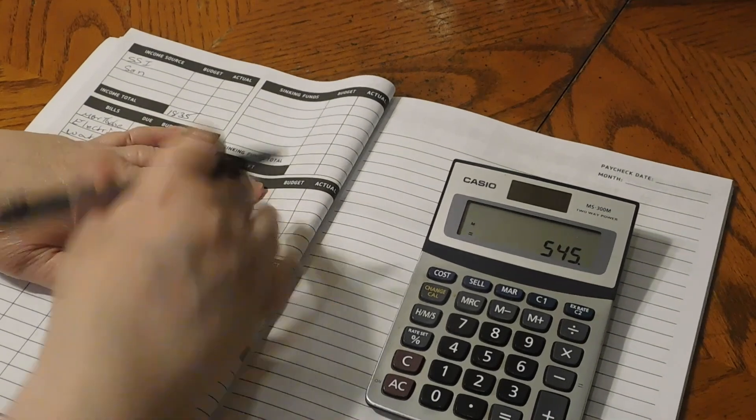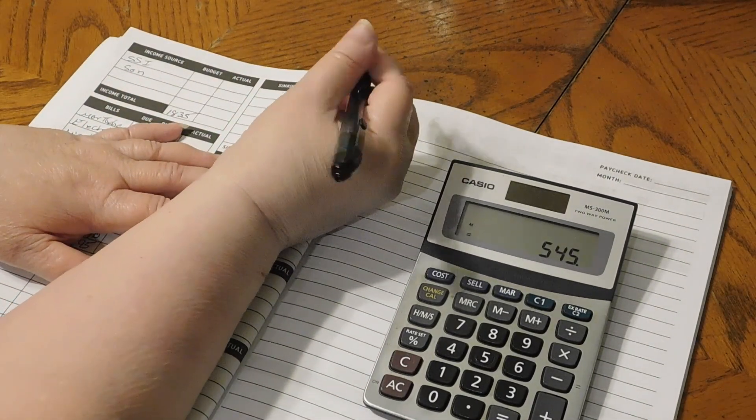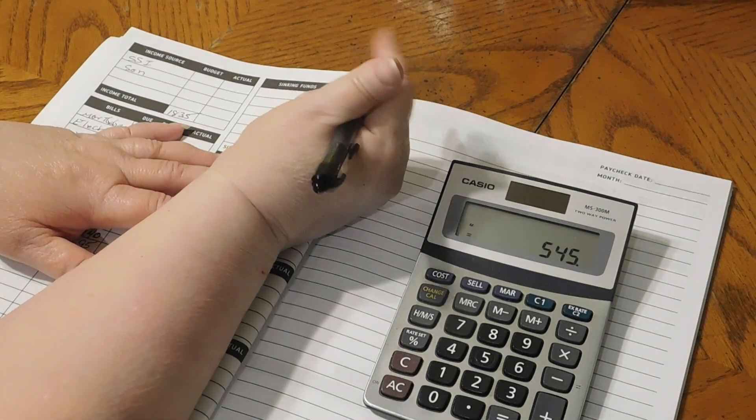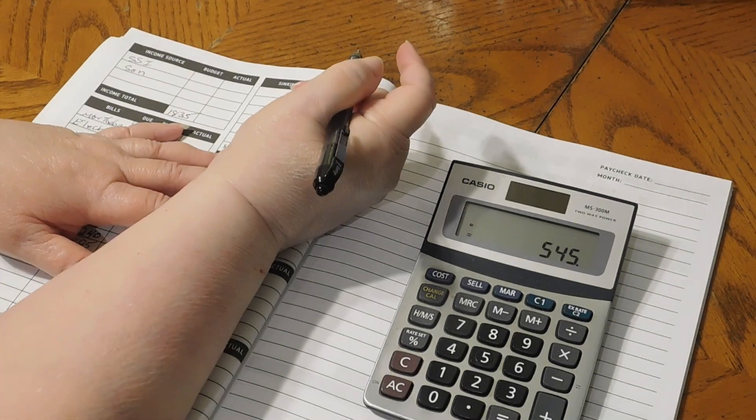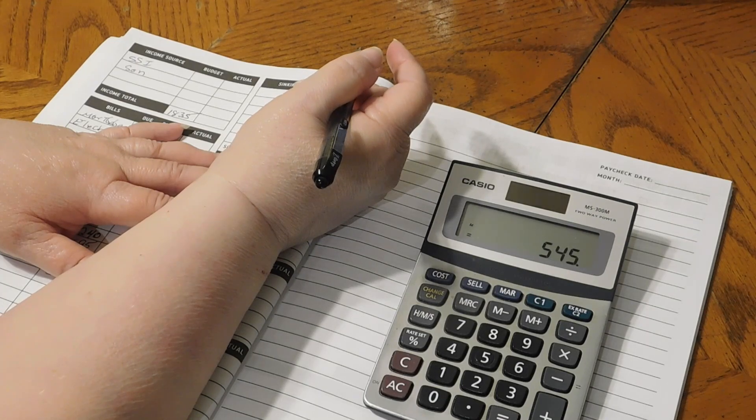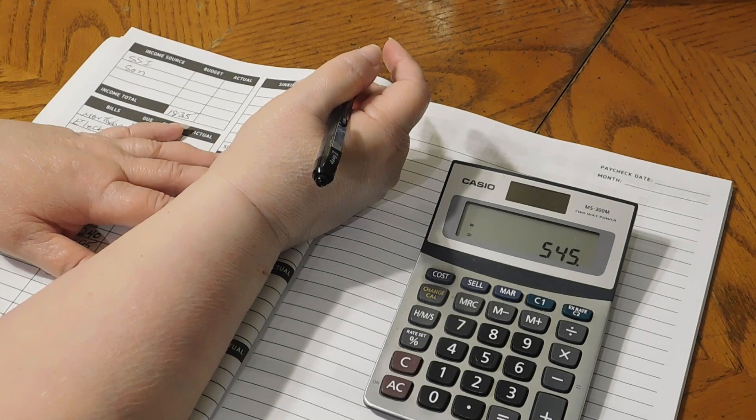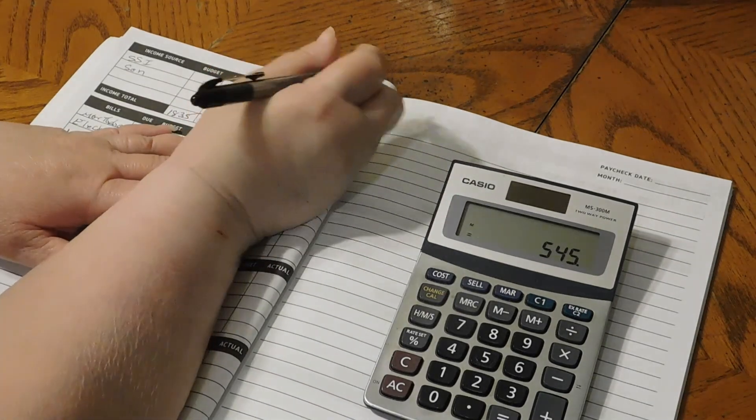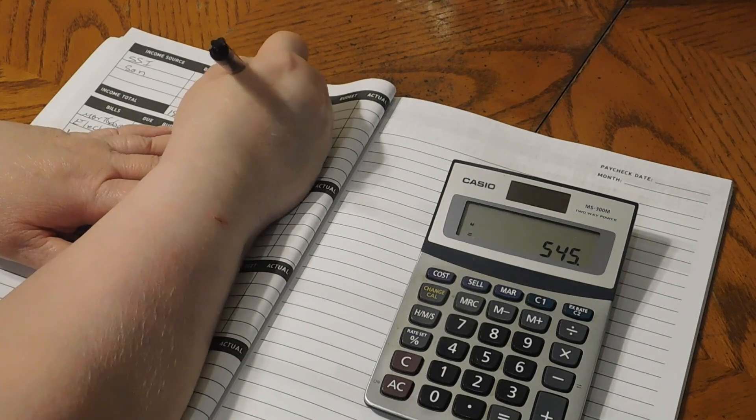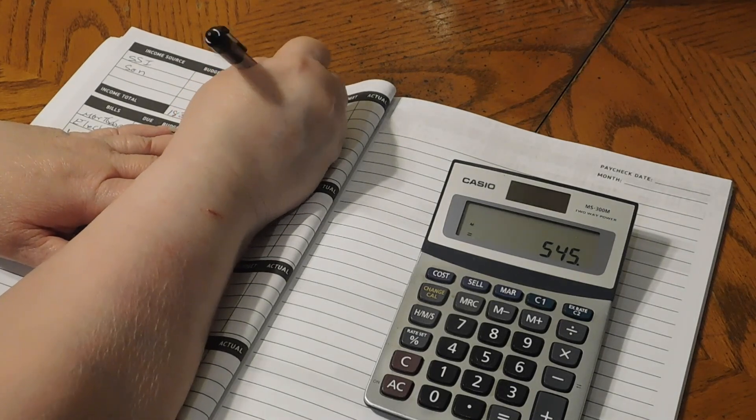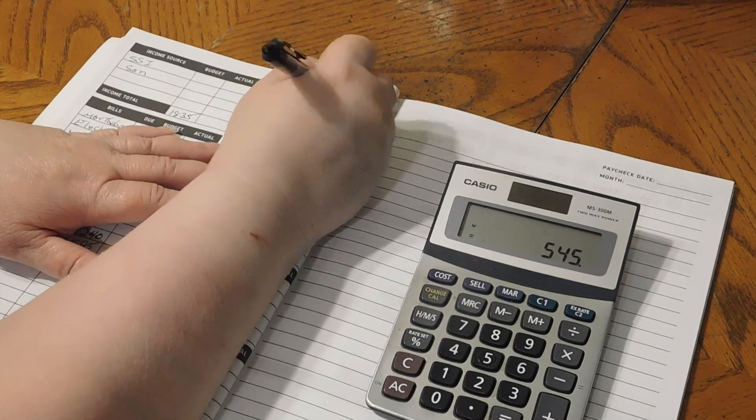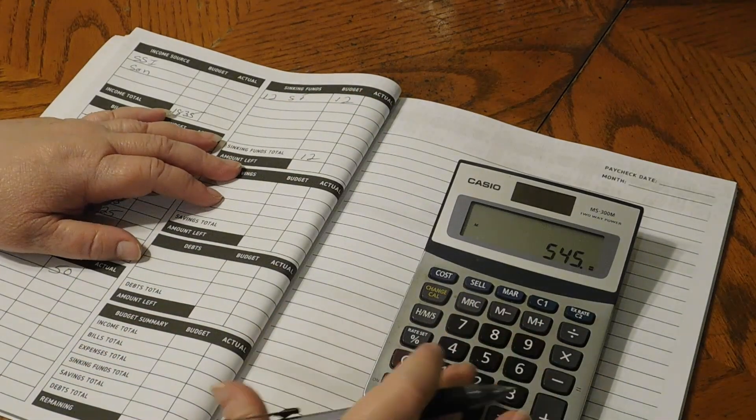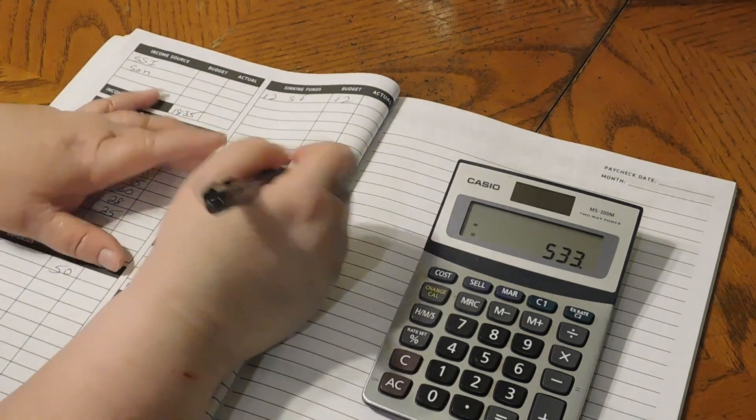Now up here we have our sinking funds. All of our sinking funds is going to get, I forgot to put in for our sinking funds. Well, they're all going to get $1. So there's 12 sinking funds. And that will be $12.